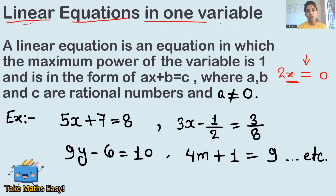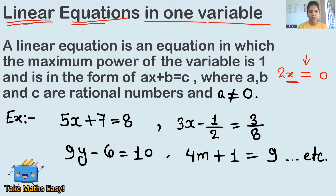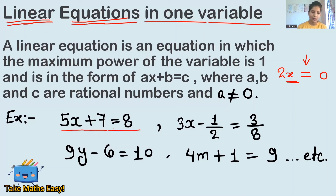In a linear equation in one variable, there will be only one variable present in the equation — either x, or y, or z, whatever — but only one variable. And the power of that variable will always be one. That is why it is called a linear equation. For example: 5x plus 7 equals to 8 — this is a linear equation in one variable.